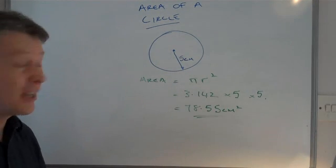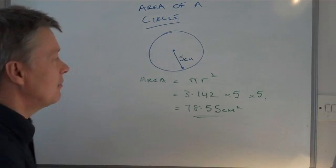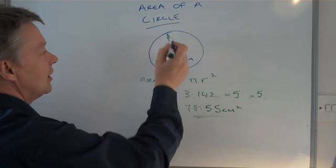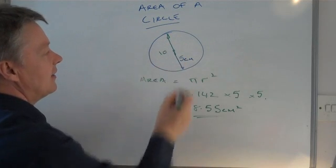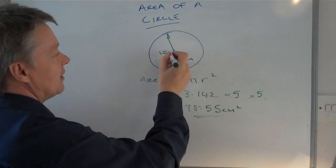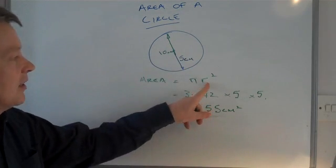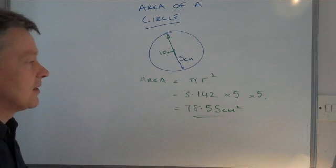A couple of variations that you might get on this particular question is they might occasionally give you the diameter of the circle, which let's say it's 10 centimeters. Well, if they give you the diameter, then just half it to give you the radius, which is 5 centimeters there.